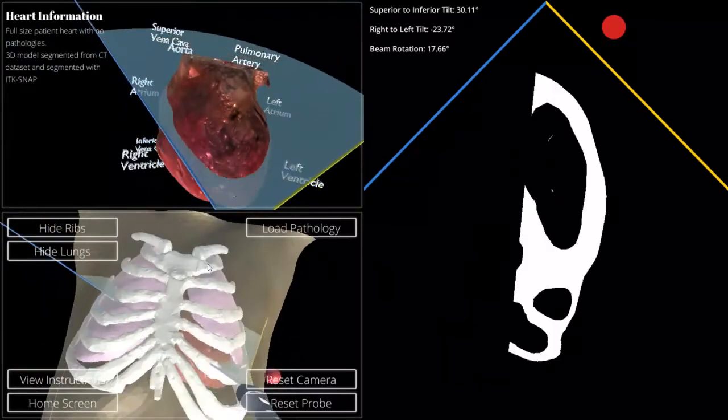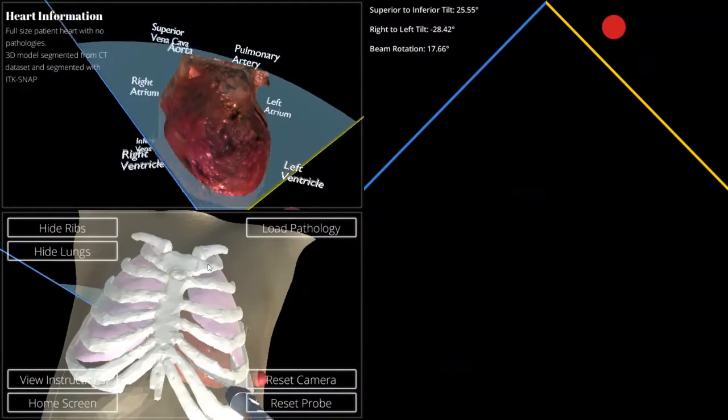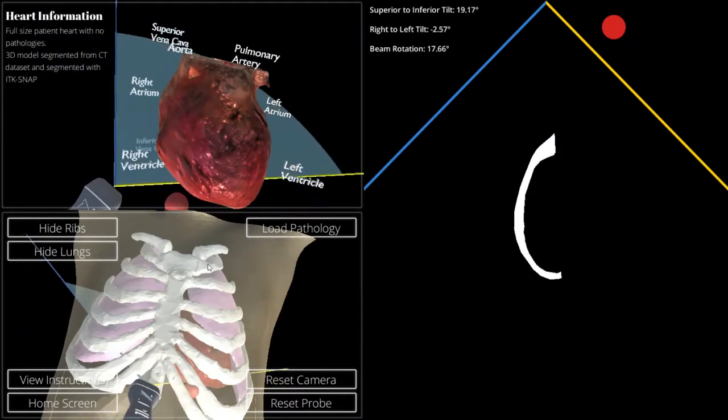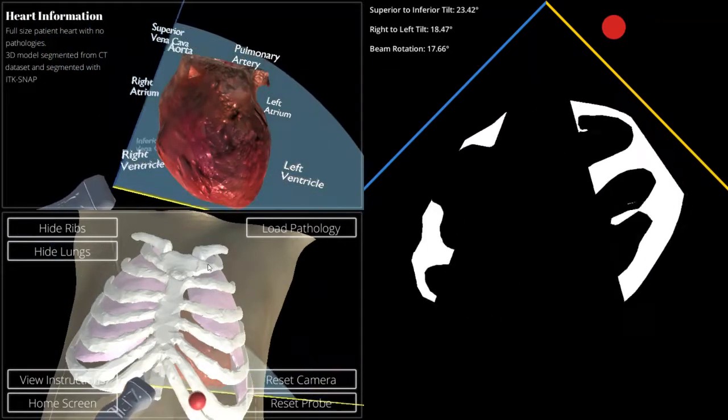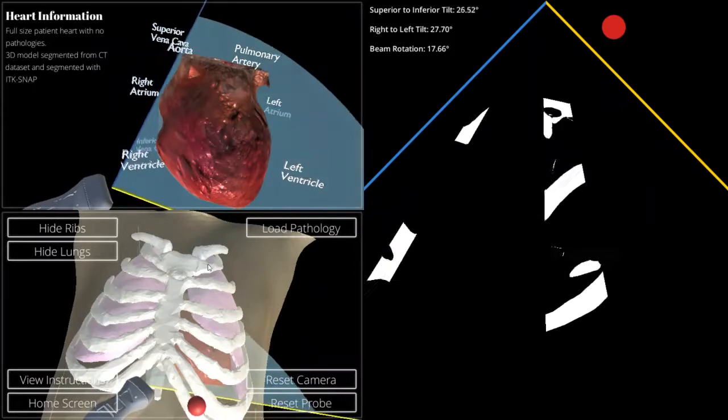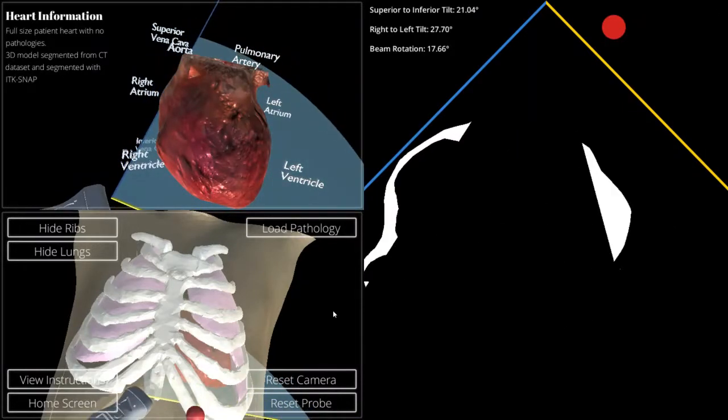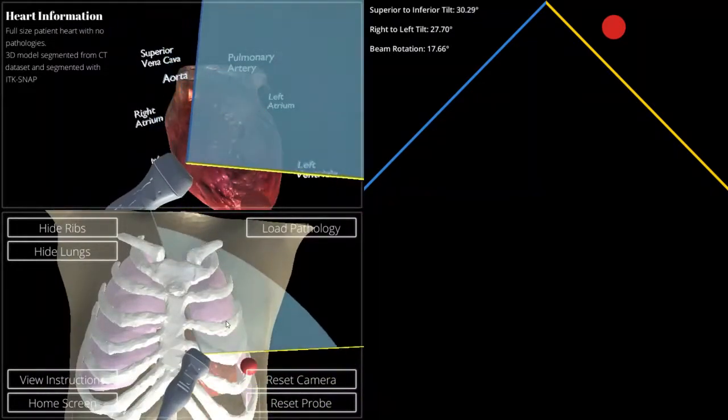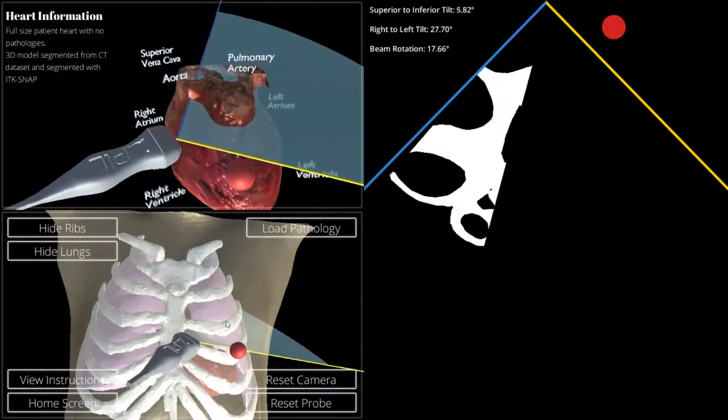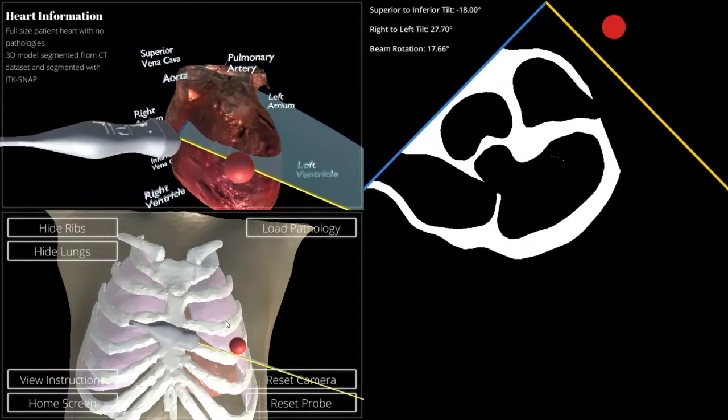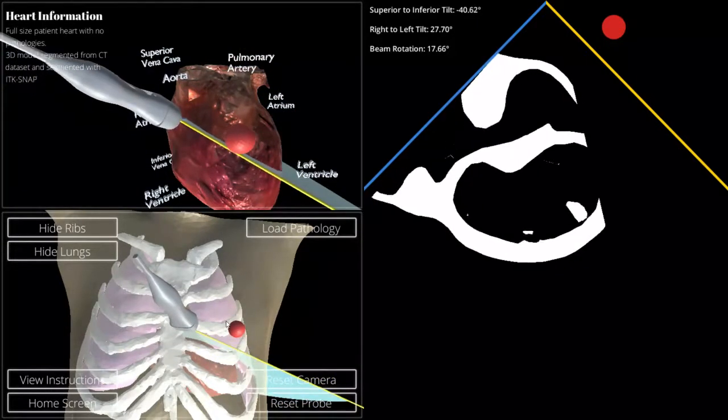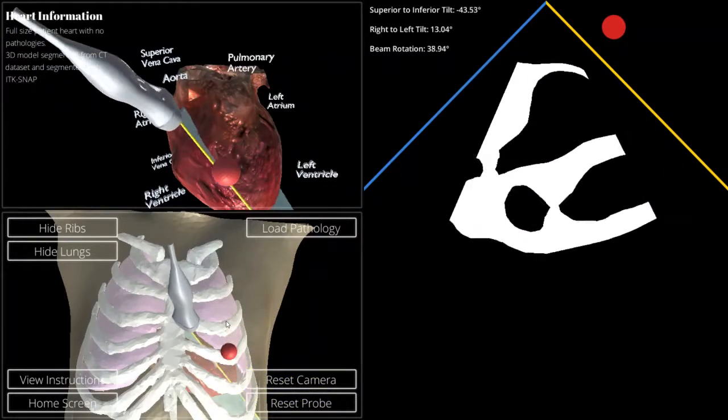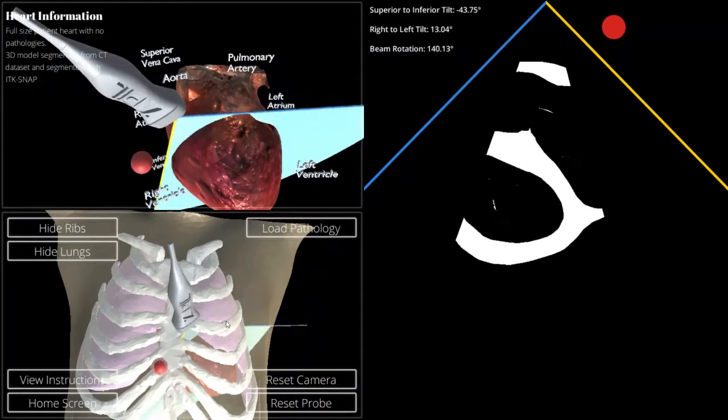We can then go through and repeat this exercise for all the different ribs, and even subcostal will work. This entire thing is driven by the keyboard. Subcostal is a little bit trickier because of the notch of the ribs, but it is possible. And if we were trying to get the long axis view, that is also certainly possible by going through these two ribs, positioning it correctly, and rotating the beam itself.